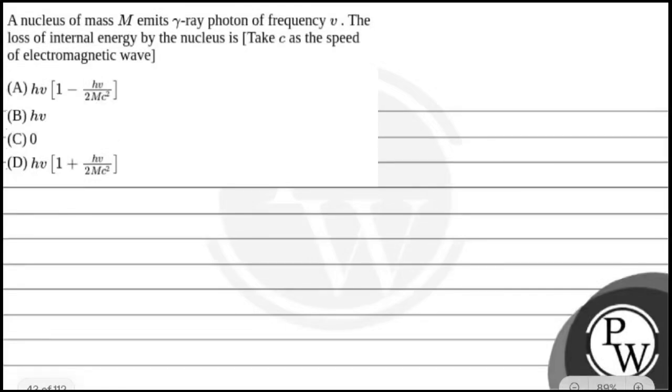Hello, let's read this question. The question says a nucleus of mass M emits gamma-ray photon of frequency ν. The loss of internal energy by the nucleus is, take c as the speed of electromagnetic wave. The given options are: option A: hν(1 - hν/2Mc²), option B: hν, option C: 0, and option D: hν(1 + hν/2Mc²).